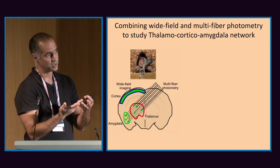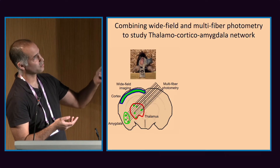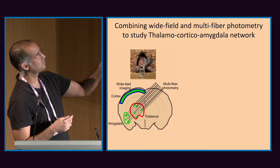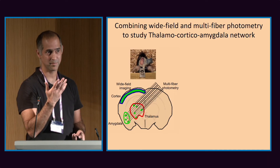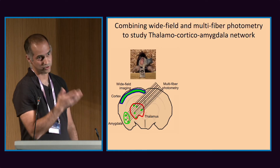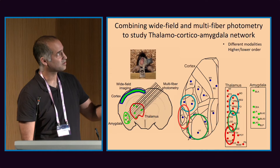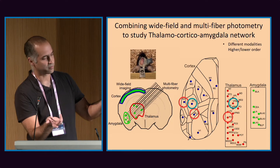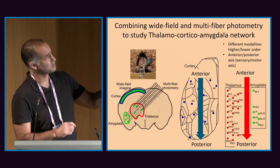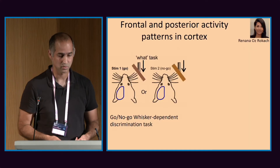Now we want to see more, not only cortex. We're combining wide-field imaging with multi-fiber photometry. We already have four, almost five mice. From one side we image the cortex, and with an angle of 55 degrees we insert 32 optical fibers to target thalamic areas and also some amygdala areas. You can see the preparation: whisker-related areas, auditory, visual — both in cortex and in thalamus. We see lower-order areas, for example VPM and PO in thalamus and also in cortex. I emphasize the anterior-posterior axis, not only in cortex but also in thalamus.